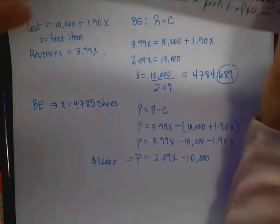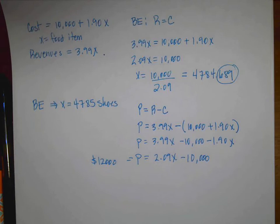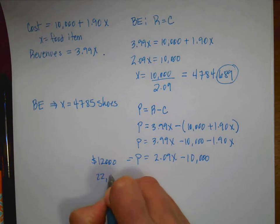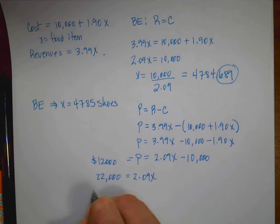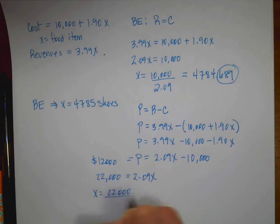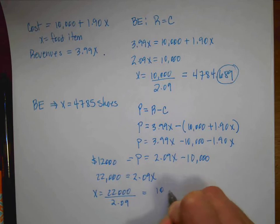And I want my profit to equal $12,000. So now I just need to solve this equation. $10,000 plus $12,000 is $22,000. And that's going to equal 2.09X. So X is the 22 divided by the 2.09.